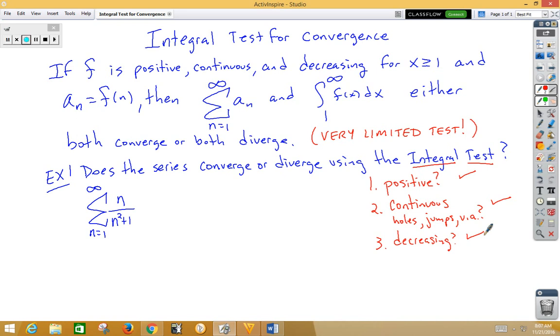So let's go ahead and start by rewriting this as an improper integral. So from 1 to infinity of x over x squared plus 1 dx. Well, remember, if we're doing an improper integral, now we're doing the limit. So limit as L approaches infinity, the integral from 1 to L of x over x squared plus 1 dx.